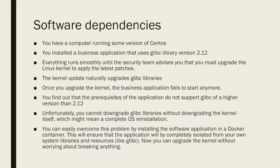Say you have a computer running some version of CentOS. You installed a business application that uses glibc library version 2.12, a very popular library in Linux. Everything runs smoothly until the security team advises you to upgrade the Linux kernel to apply the latest security patches. The kernel update naturally upgrades glibc libraries, since glibc is considered part of the kernel — so when the kernel gets updated, those libraries get automatically updated. Once you upgrade the kernel, the business application fails to start.